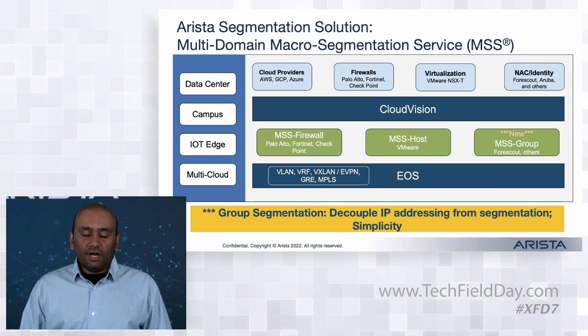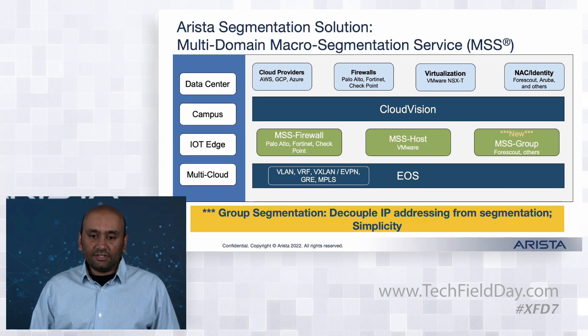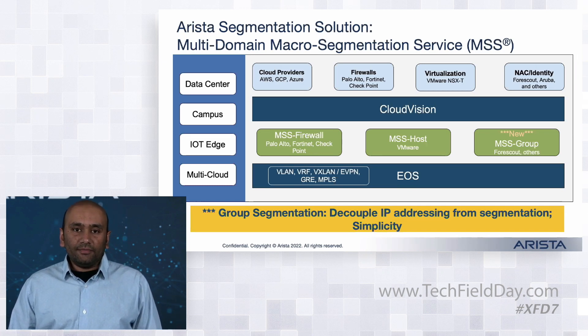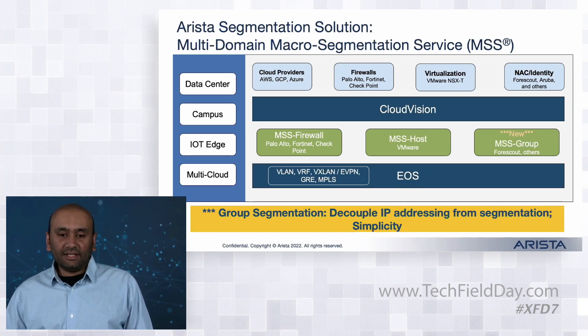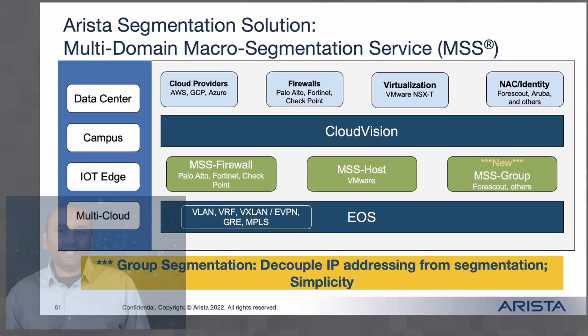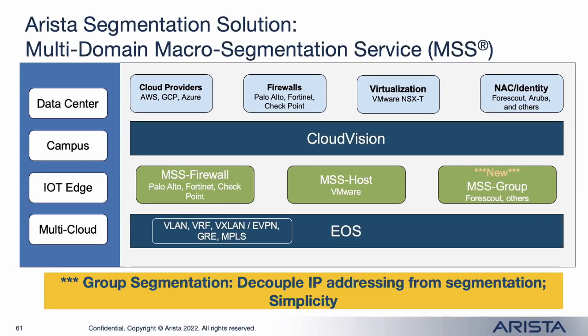Just to give you a quick idea where MSS stands: there are a variety of segmentation solutions that are already present in EOS. For example, we already support VLANs, VRFs, VXLAN, and ACLs as forms of segmentation, and these have been working well for a variety of use cases. What we have done is added MSS, which is a set of capabilities that are open and standard-based and allow us to integrate security policies into the network.